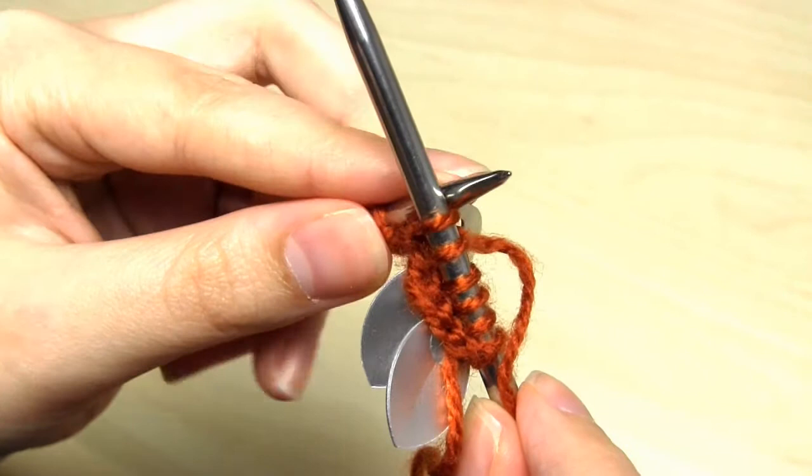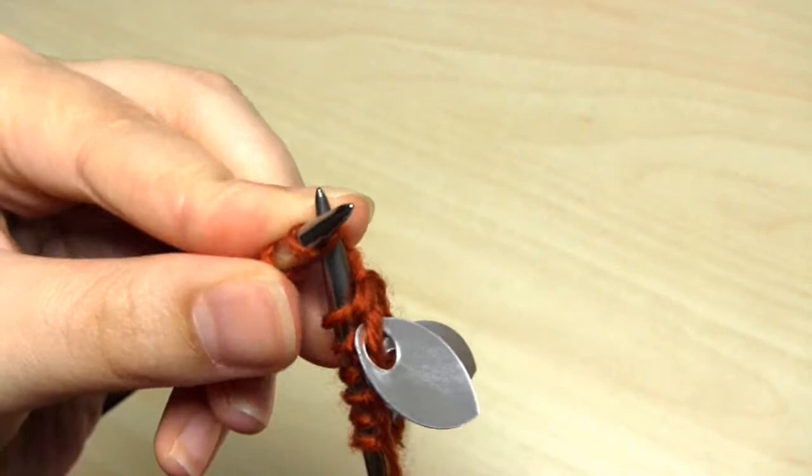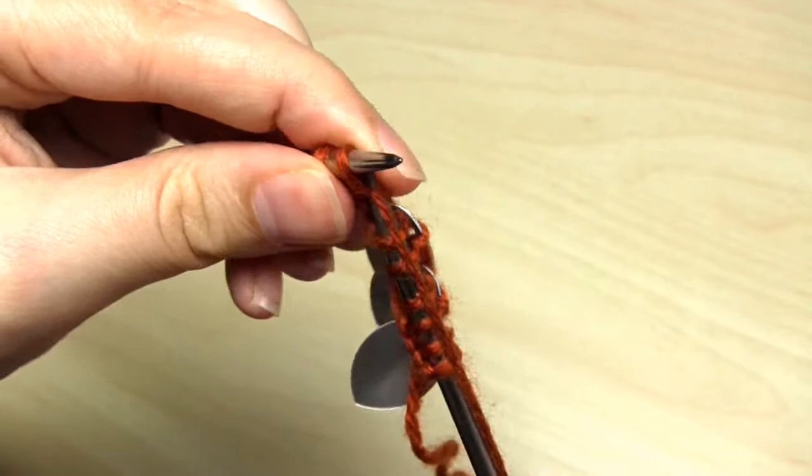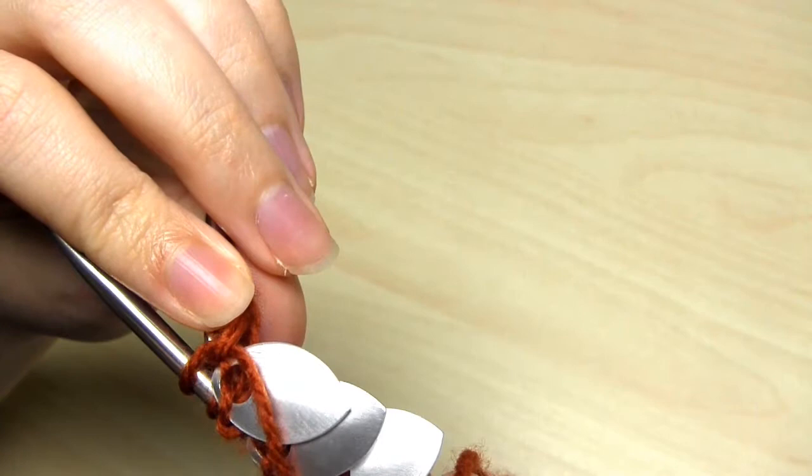You always have to do a normal stitch in between each scale. So now we just do a regular knit stitch. And that adds the additional support on the other side of the scale. If we didn't do a normal stitch between the scales, each scale would only be held on by one piece of yarn, and that wouldn't make them very secure or stable.